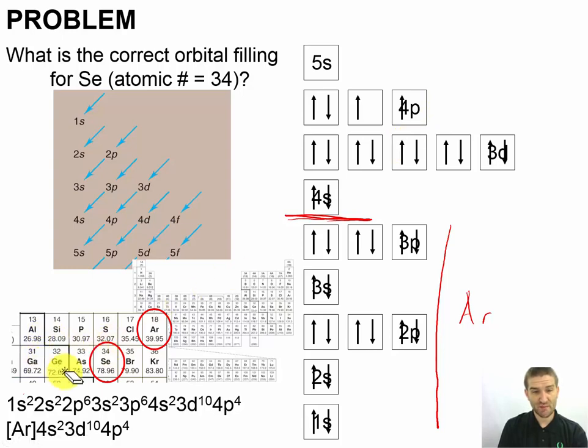I'll also remind you that sometimes we'll group that together. Sometimes you'll see people put the 3d¹⁰ at the beginning and have the 4s², 4p⁴ written afterward. We still follow the same filling rules. We still have the same superscripts, but you are allowed to change the order of these depending on what thing you're emphasizing.